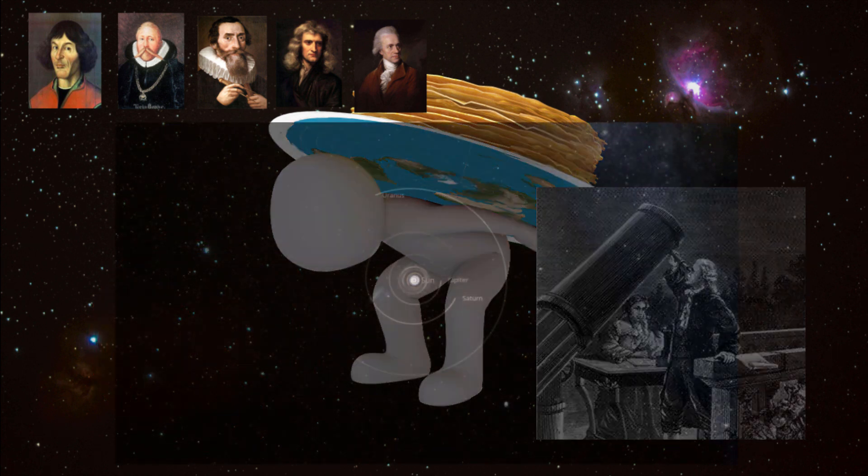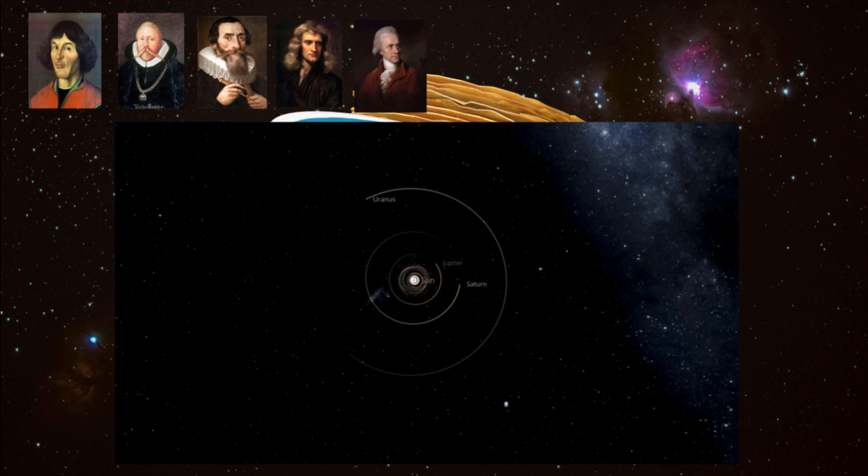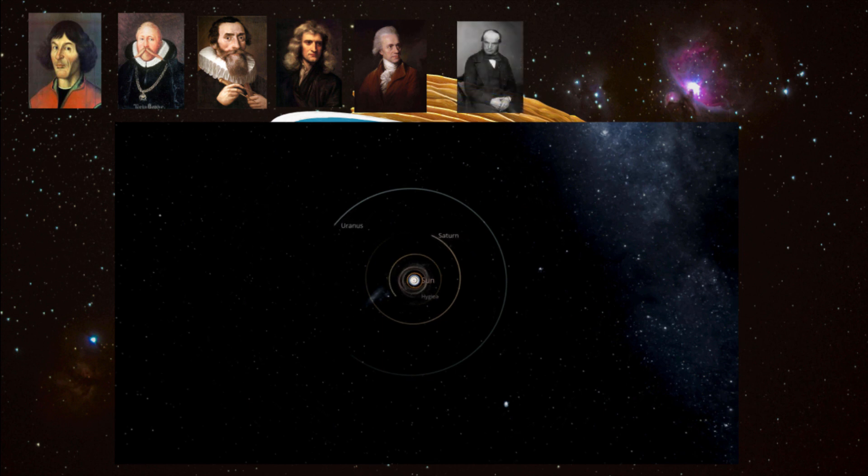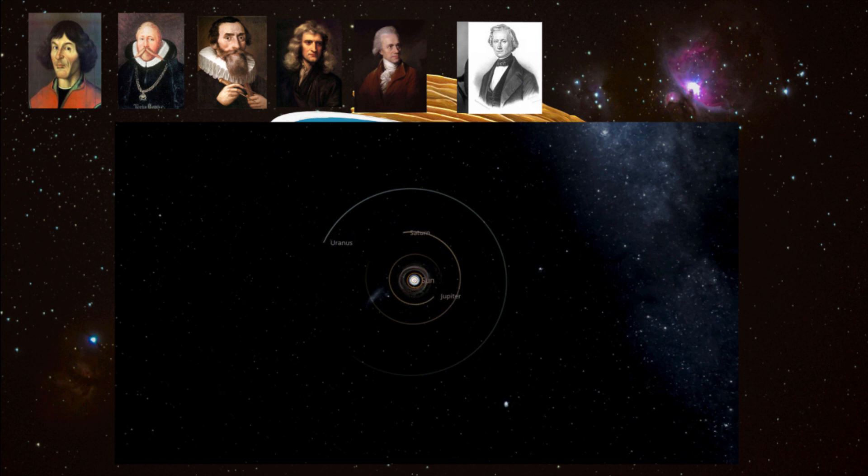Some astronomers theorized that maybe Newton's laws of gravitation didn't remain the same at great distances, while others began to believe that maybe a massive object was located outside the orbit of Uranus. Unknown to each other, British astronomer John Adams and French native Urbain Le Verrier began to use Kepler's laws to see if there was in fact another body deep in the solar system.